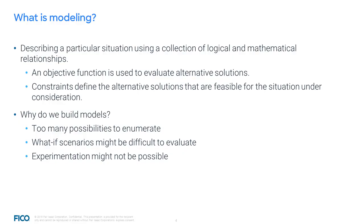What is modeling? A model is a simplified representation of reality, an approximation of reality. It is used instead of reality so that we can perform certain operations on it, in our case solving it by a MIP solver. Therefore, it has to fulfill certain formal requirements, which contributes to the simplification. Modeling mathematical optimization problems consists of describing a particular situation using a collection of logic and mathematical relationships between different quantities. An objective function is used to evaluate alternative possibilities, while constraints define the solution space of feasible options.